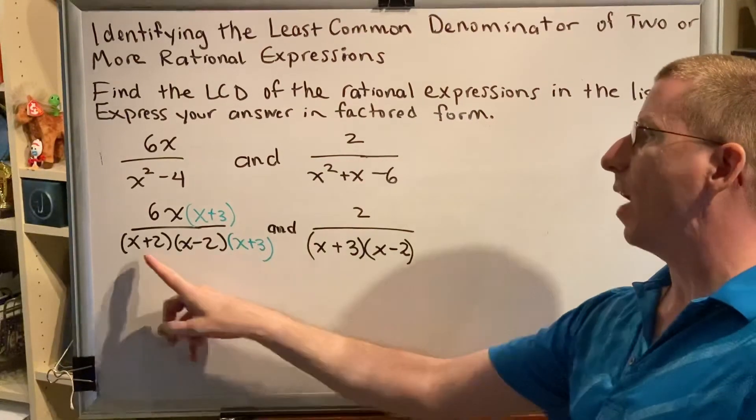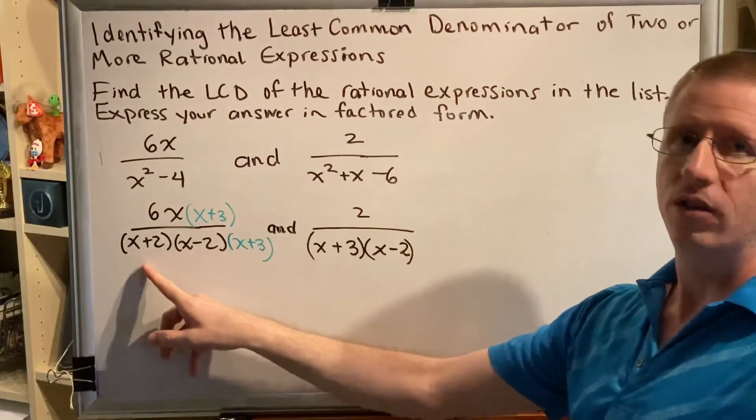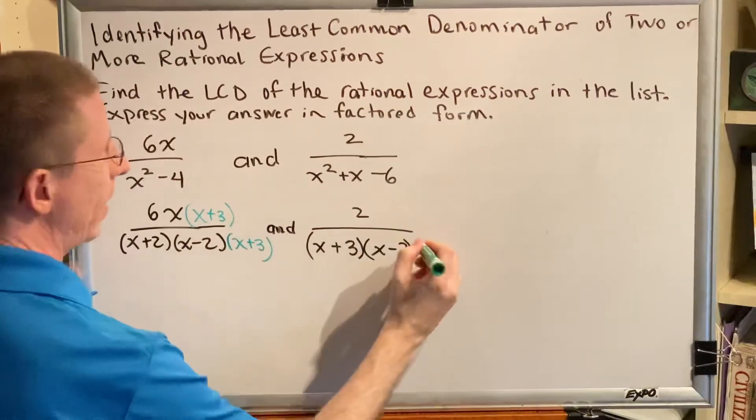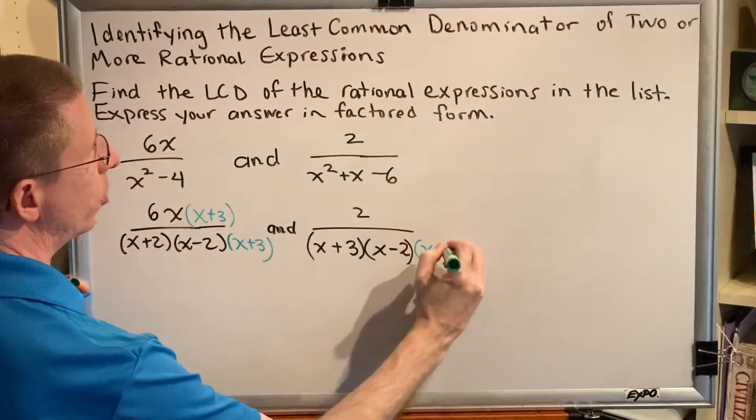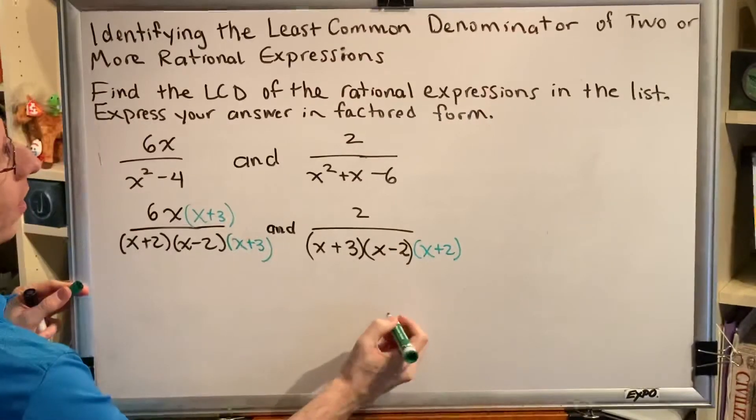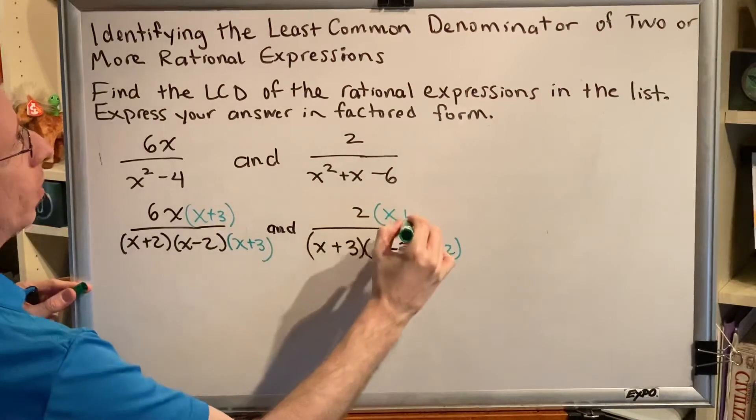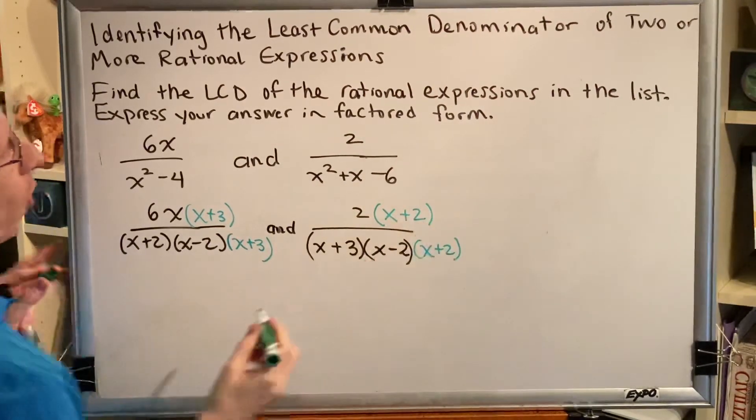Well, the other fractions denominator has the factor x plus 2, which is missing from here. So we place the additional factor x plus 2 down in the denominator. That changes the value of the fraction. To restore it to its original value, place an x plus 2 in the numerator as well.